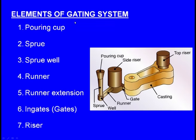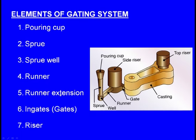Now, these are the elements of the gating system: first, the pouring cup; second, the sprue; third, the sprue well; fourth, the runner; fifth, the runner extension; sixth, the ingates, also known as gates. Finally, the riser is also considered one of the elements of the gating system, but the design of the riser was covered in previous classes. In this lecture we will concentrate on the pouring cup, sprue, sprue well, runner, runner extension, and ingates.